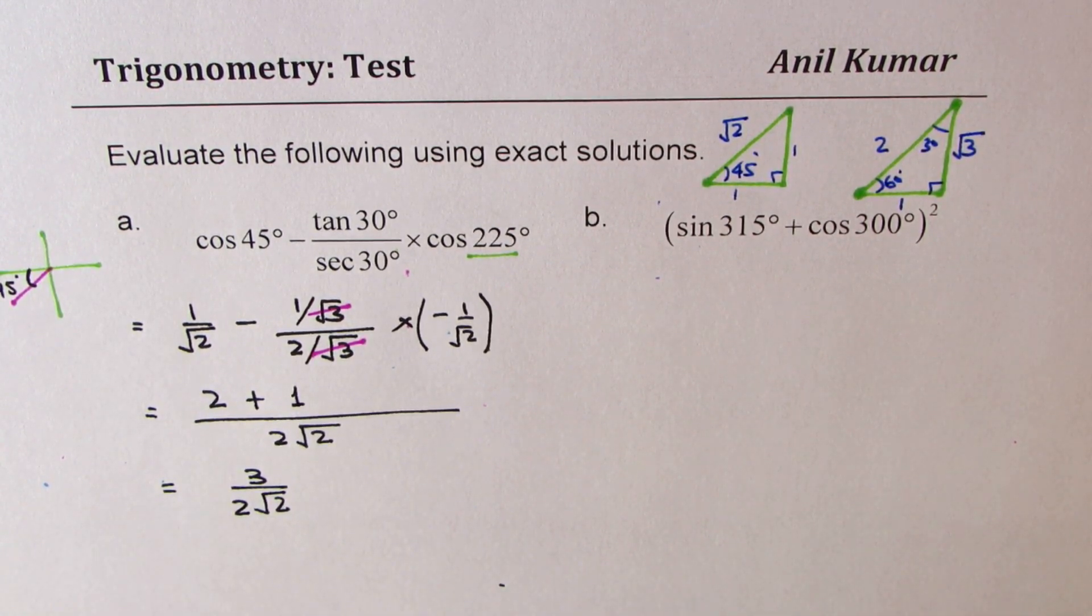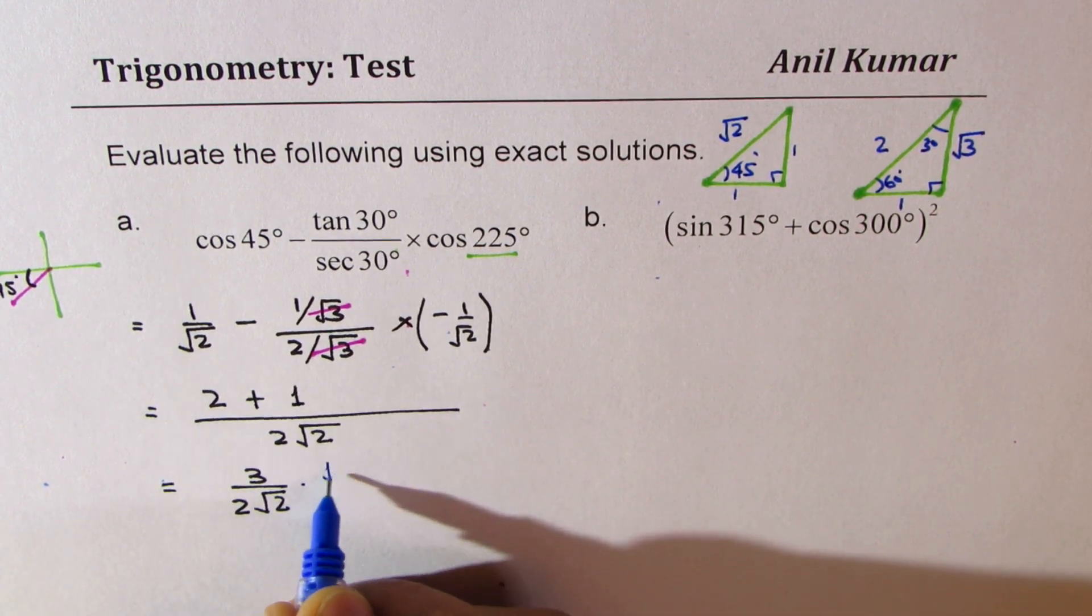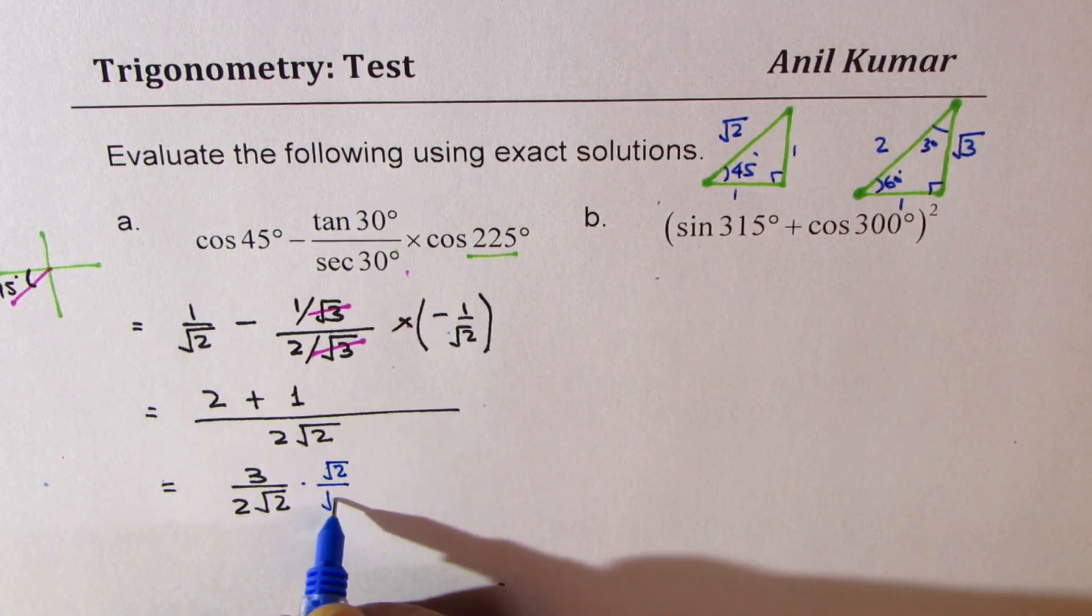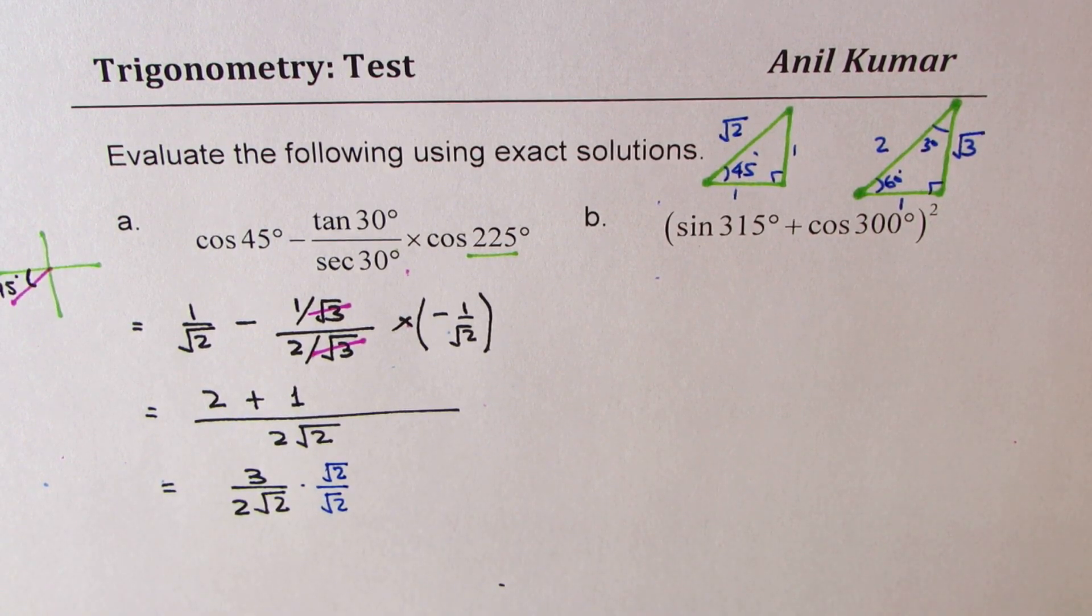Now it is a general practice to rationalize. So we are going to multiply this by square root 2 and also divide by square root 2. So we have rationalized this.